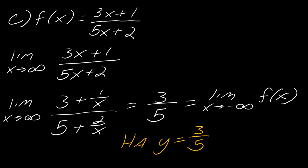So what this means is that we have a horizontal asymptote at y equals 3 fifths. Don't forget to state this part about the horizontal asymptote if that's the question being asked.